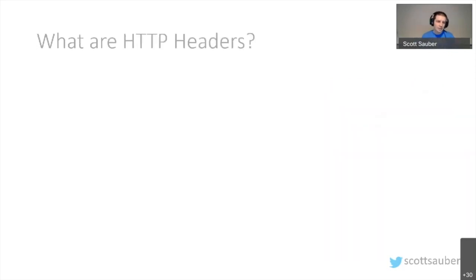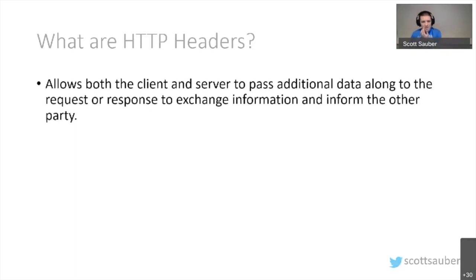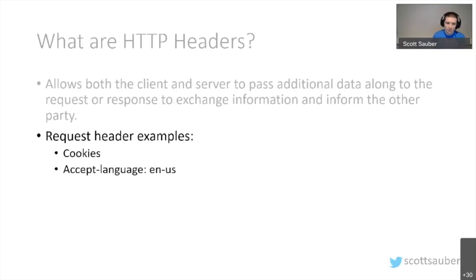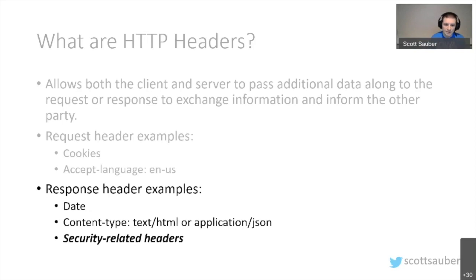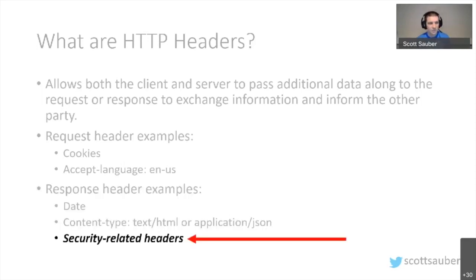Before we get into HTTP security headers, let's level set on what HTTP headers are. HTTP headers let the client and server pass additional data back and forth. Some example request headers are things like cookies or what language you're using — those are sent from the browser to the server. Response header examples include the date, content type, and security-related headers, which is what we're focused on today — something the server sends down to the browser.